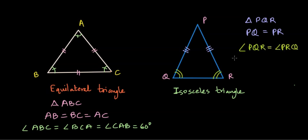In an equilateral triangle, all the angles are 60 degrees. That is not the case in an isosceles triangle — the measures of these angles can be anything, but they are acute angles.